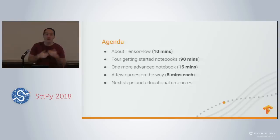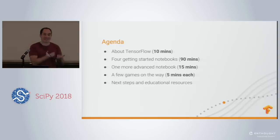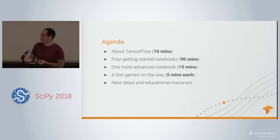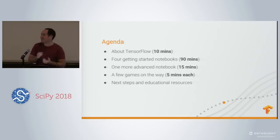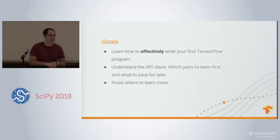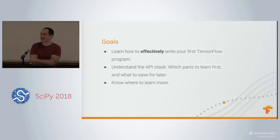We're going to do four beginner's notebooks. These are all inspired by a book by Francois Chollet, who's the author of Keras, which is a fantastic high-level API for deep learning. Then we're going to do a couple of advanced notebooks which show some new things that weren't possible before. This is mostly hands-on. I'm going to start with about a 10 or 15-minute quick overview of what's new in TensorFlow, and then the rest of the session will be hands-on.